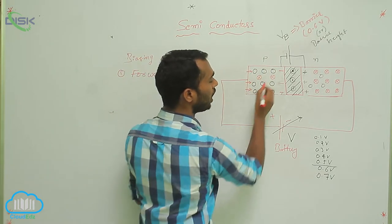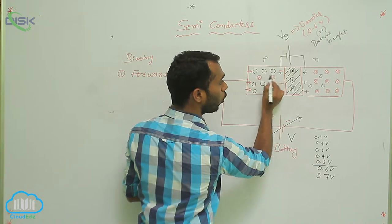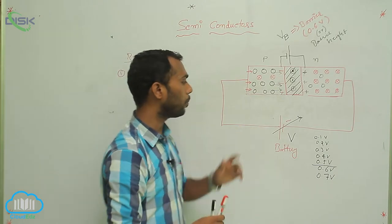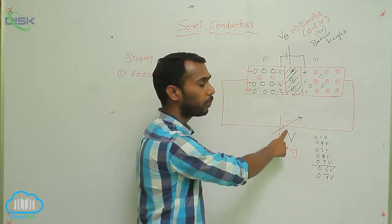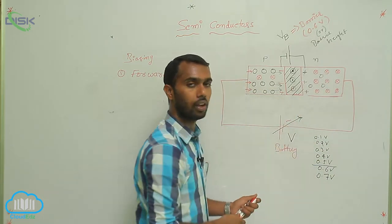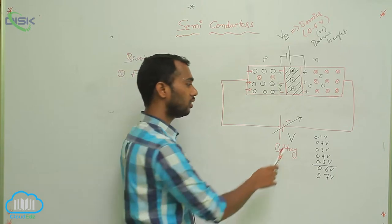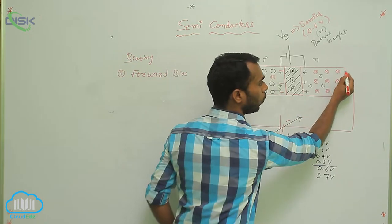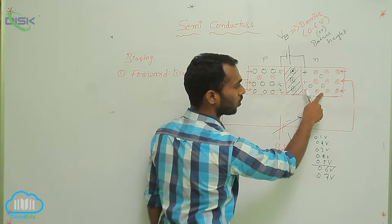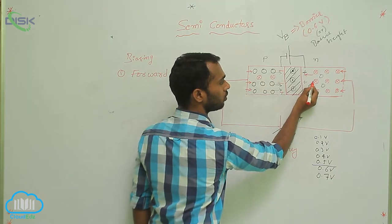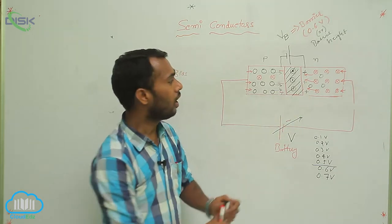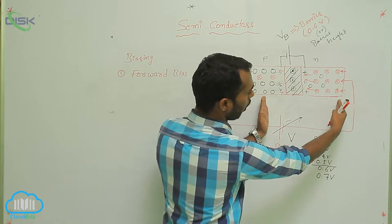These holes are moving towards the junction. Now, the negative terminal of the battery is acting some force on electrons. Electrons are a negative charge, and this terminal is also a negative charge — negative to negative repulsion force. That is why the negative terminal of the battery pushes the electrons towards the junction. Holes are moving towards the junction, and electrons also moving towards the junction because of the force.